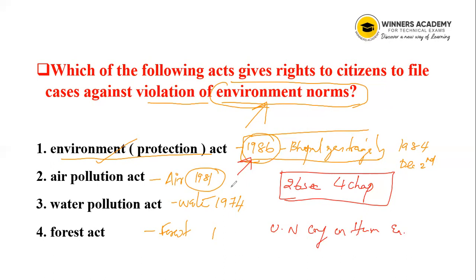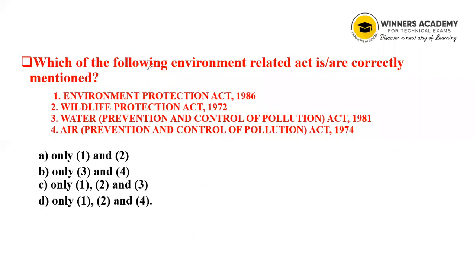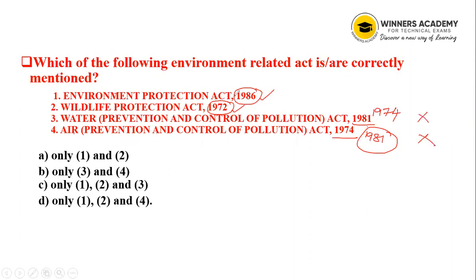Next question: Which of the following environment-related acts are correctly mentioned? The Environment Protection Act is 1986 — correct. The Wildlife Protection Act is 1972. The Water Prevention and Control of Pollution Act is 1974. The Air Prevention and Control of Pollution Act is 1981. So Air Act is 1981 and Water Act is 1974. Options 1 and 2 are correctly mentioned — that is option A.